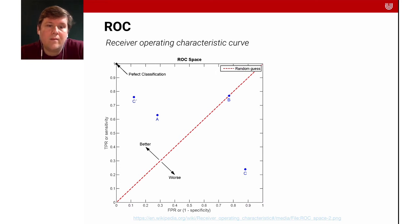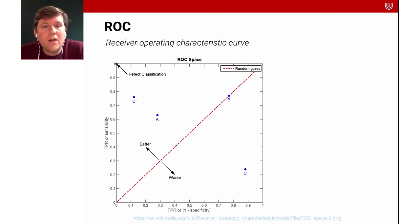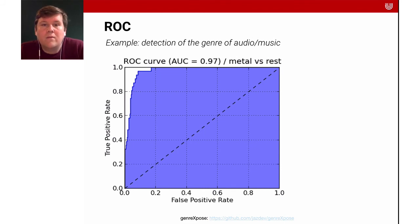Here's a nice example from Wikipedia on the receiver operating characteristic, showing what the space means. The red dotted line represents random guesses — a system that hasn't learned anything. The top left would be a system with perfect classification, and points A, B, and C represent different trade-offs. Here's how the ROC curve looks in practice for detecting the genre of music — comparing how well the system detects metal versus the rest — and the predictions are quite good.